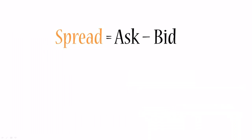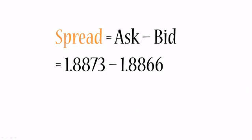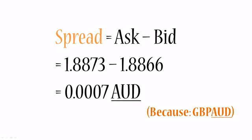The spread is the ask minus the bid. That means 1.8873 minus 1.8866, which equals 0.0007. So that is less than one Australian cent — specifically 0.07 of an Australian cent. This is in Australian dollars because the currency pair is British pound Australian dollar, so the Australian dollar is the quoted currency.